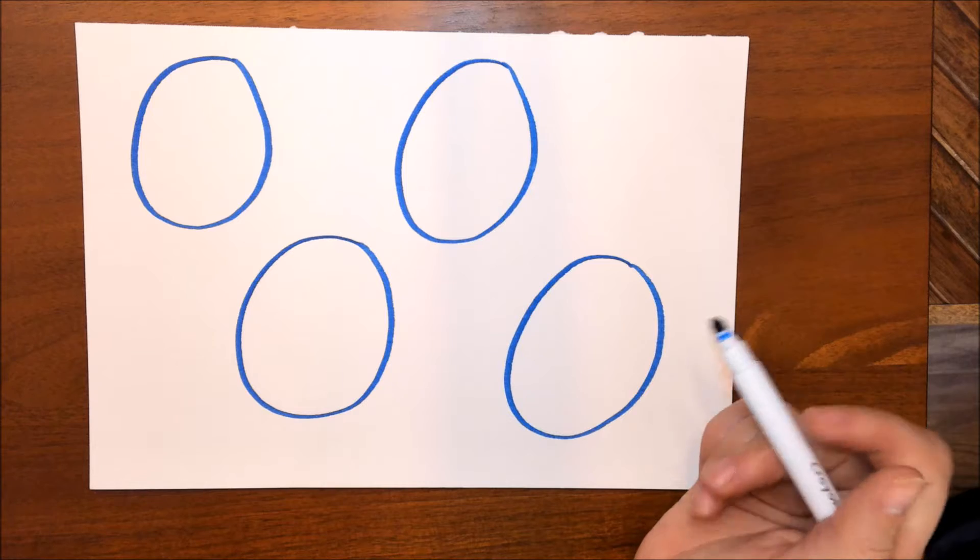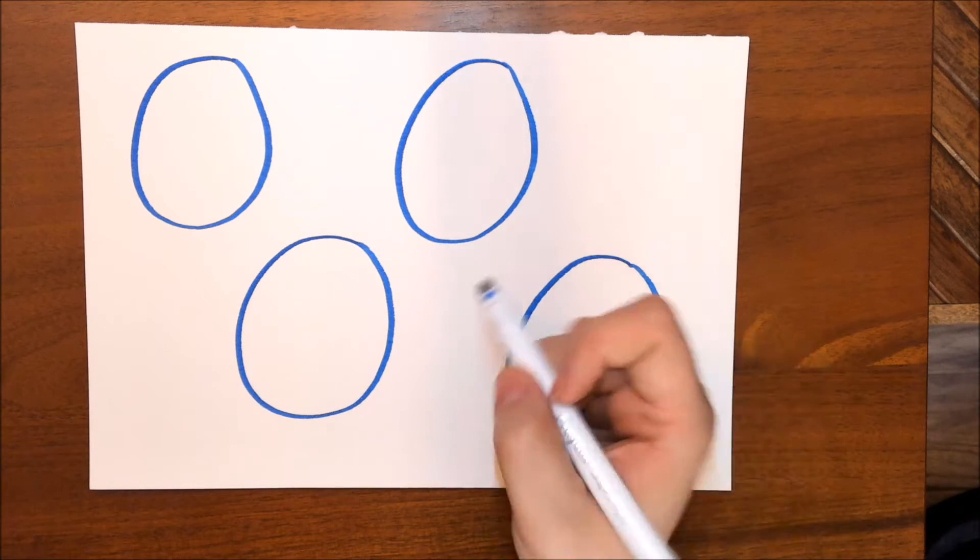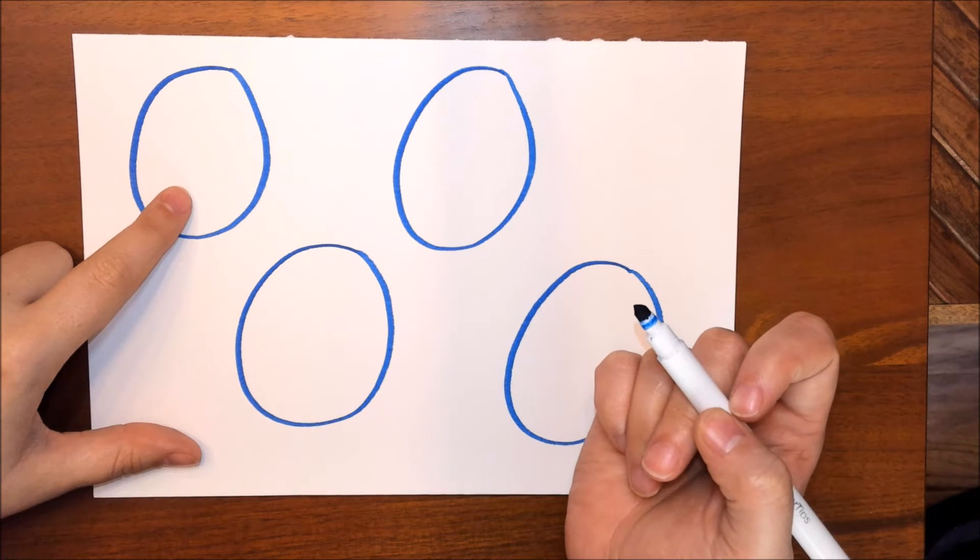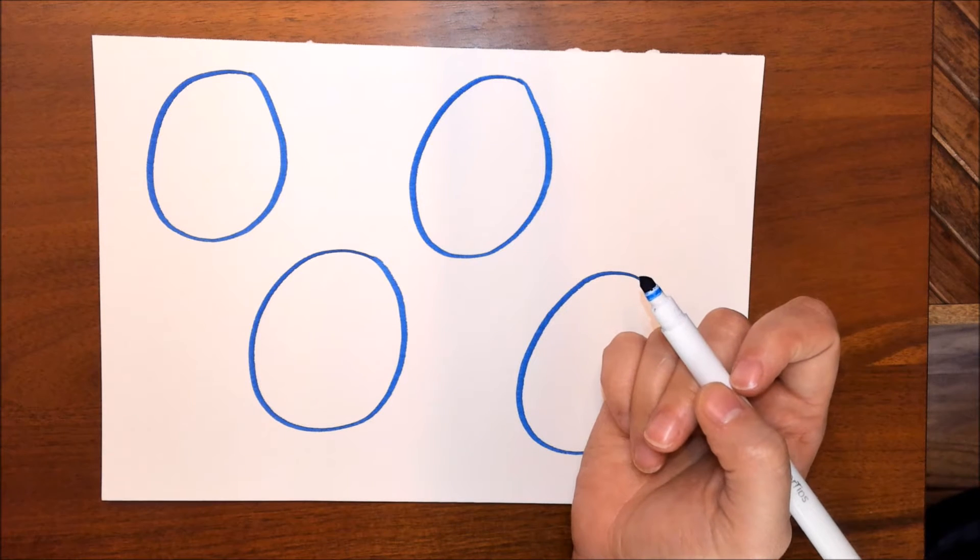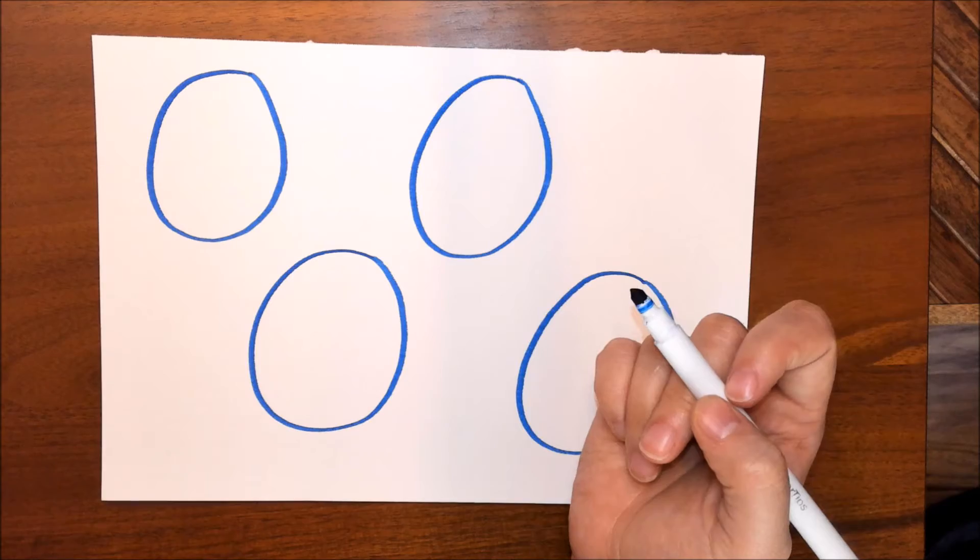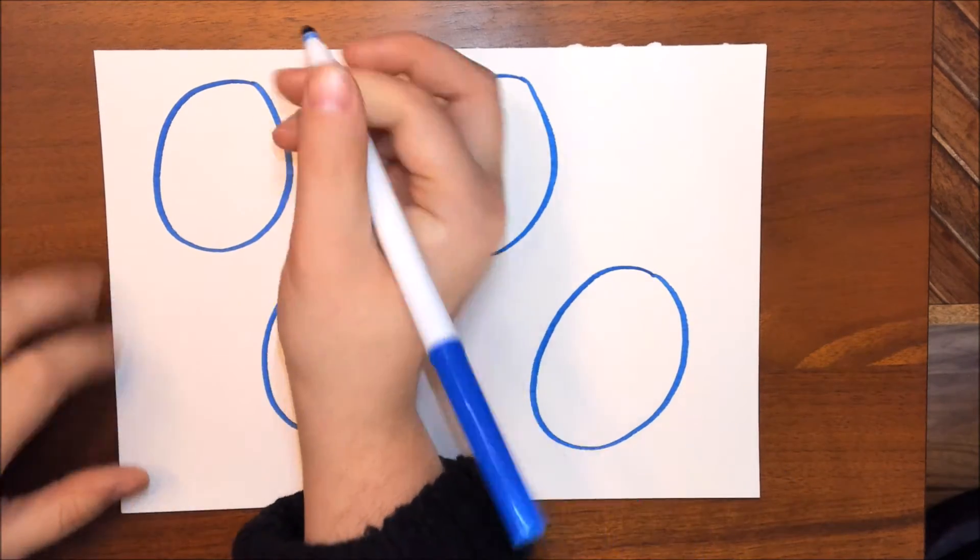Now that I have my four faces drawn, I'm going to start practicing drawing some different emotions. For my first one, I am going to start with a sad face. I want to think about what are the eyebrows going to do, do they go up or down? What is the nose, the mouth, the eyes—what are those going to do when I looked at my face in the mirror?